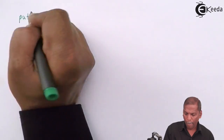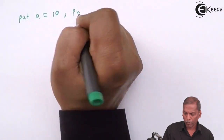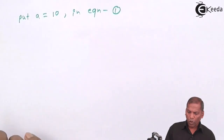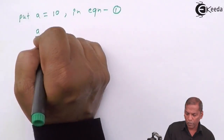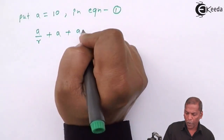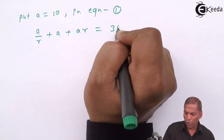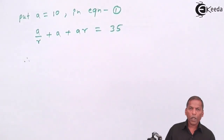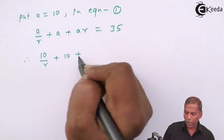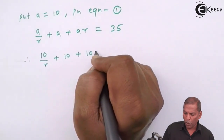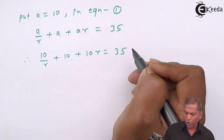Now we put A = 10 into equation 1. Equation 1 is A/R + A + AR = 35. Wherever we have A, we write 10. So that gives 10/R + 10 + 10R = 35.